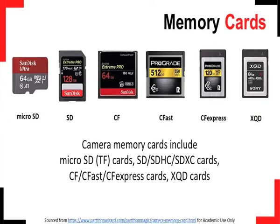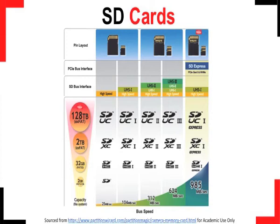Memory cards. With all digital cameras, you need a memory card to store photographs and videos. The most commonly used memory card is the SD card. SD or Secured Digital cards are supported by most cameras and are currently available in three sizes: original, mini and micro. SD cards come in many variants: the original SD standard capacity cards, SD High Capacity or SDHC cards, SD Extended Capacity or SDXC cards, and SD Ultra Capacity or SDUC cards.